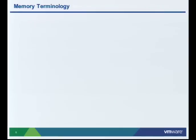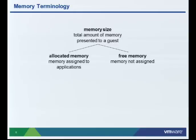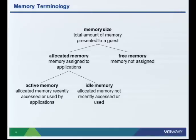Starting off super simple before we dive in. Memory size is the total amount of memory presented to a guest operating system. That breaks down into two different components: allocated memory and free memory. Allocated memory is simply the memory that has been assigned to applications. Free memory is the memory that has not been assigned to applications. Allocated memory itself can break down into two different types: active memory and idle memory. Active is allocated memory that has been recently or frequently accessed or used. Idle memory is allocated memory that is not recently accessed or used.